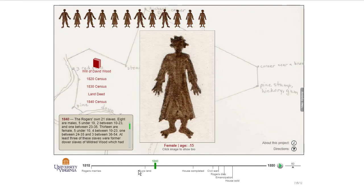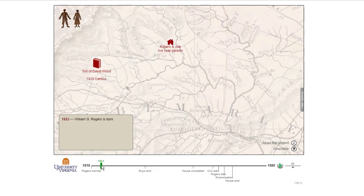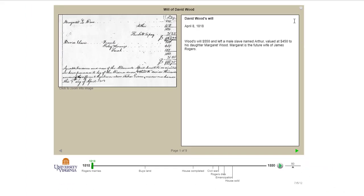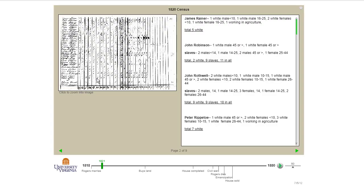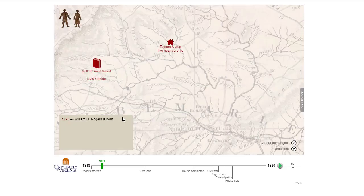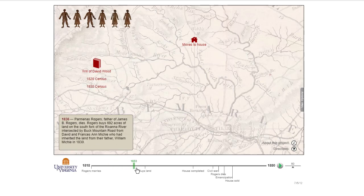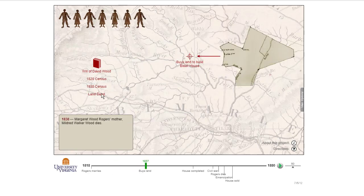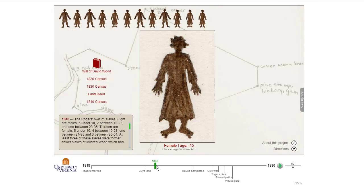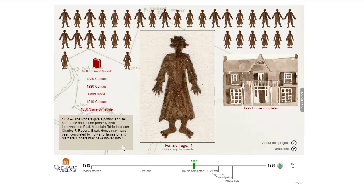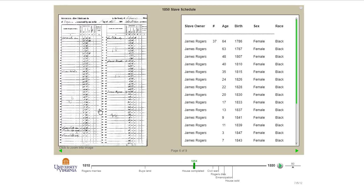If you look at the documents, initially she started off with the will, which she transcribed. Then as you go further in, the 1820 census shows some information, the 1830 census, the land deed, and the 1850 slave schedule, which shows the people and what she knew at any given time.